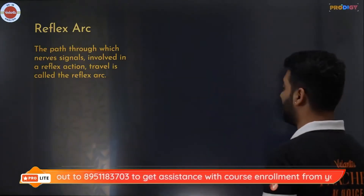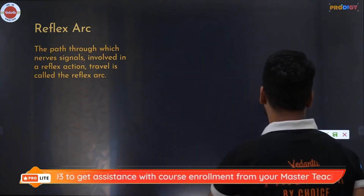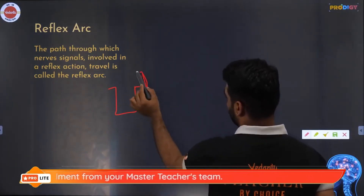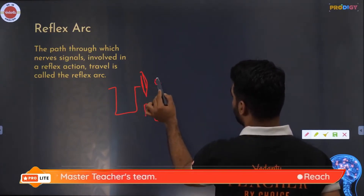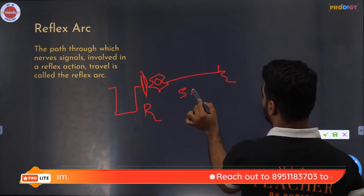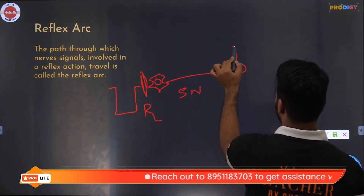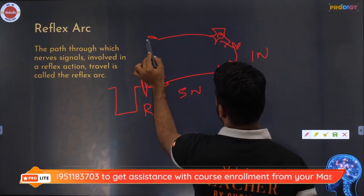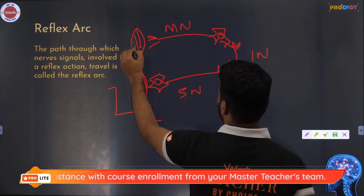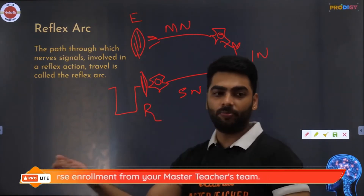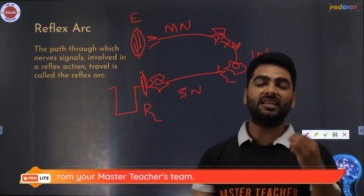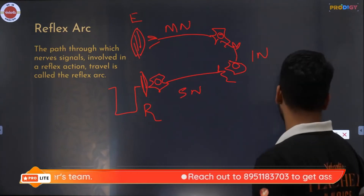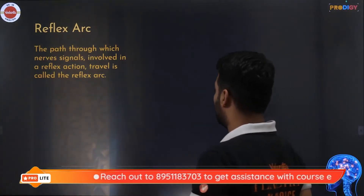For example, if you have touched a hot object, the receptor cell in your fingers gives information to the sensory neuron. The sensory neuron gives the information to the interneuron, which gives it to the motor neuron, and the motor neuron gives it to the effector cell — and you finally pull back your hand. All of this happens in a fraction of a second, and this pathway is called the reflex arc. It's not a circle, it's an arc.